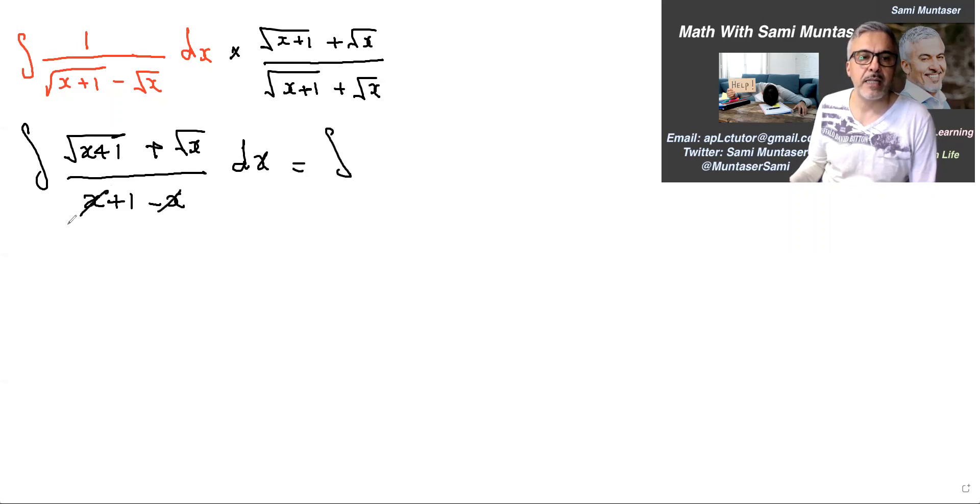This and this will cancel, and you have 1 on the bottom, so basically what we're integrating is root x plus 1 plus root x.